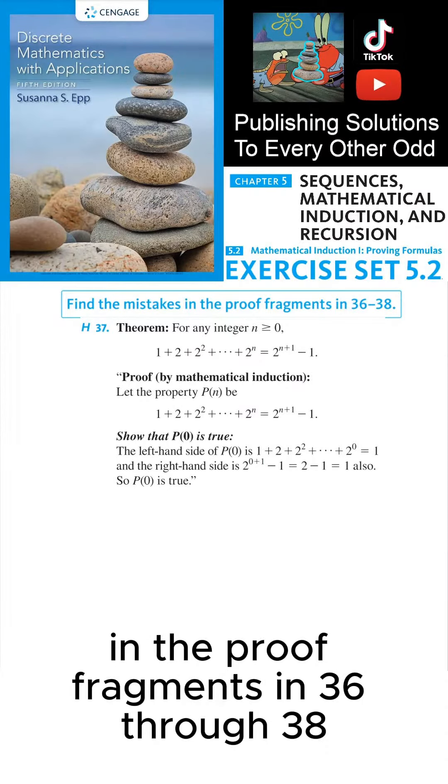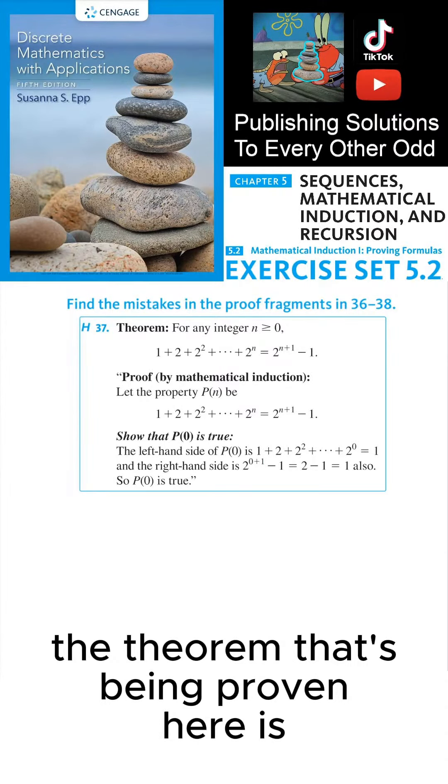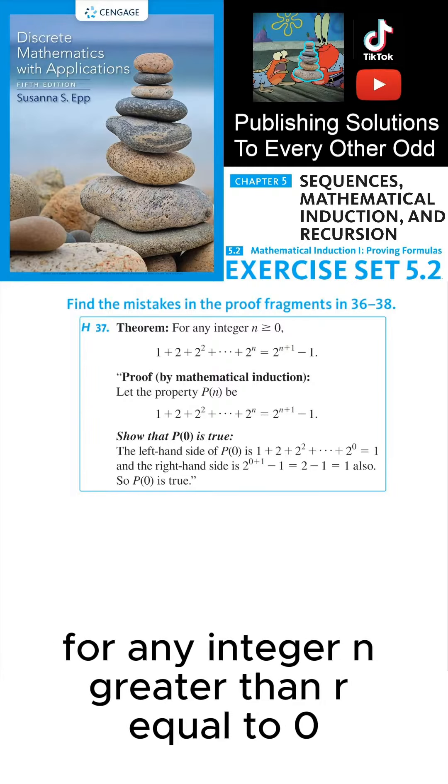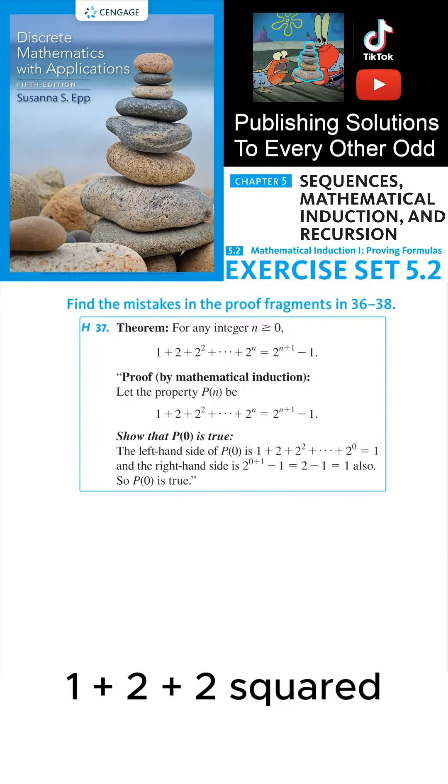Find the mistakes in the proof fragments in 36 through 38. The theorem that's being proven here is for any integer n greater than or equal to zero, one plus two plus two squared plus all the way up to two to the n equals two to the n plus one minus one.